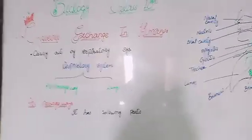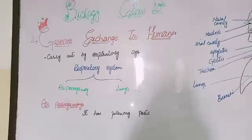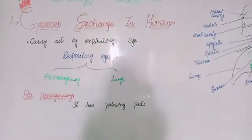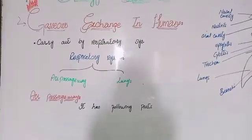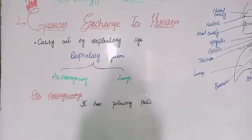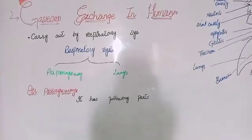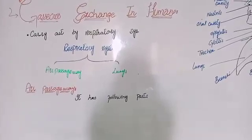In human beings there is a specific system to carry out gas exchange, and this system is known as the respiratory system. The respiratory system can be divided into two main parts. The first one is the air passageway and the second one is the lungs.